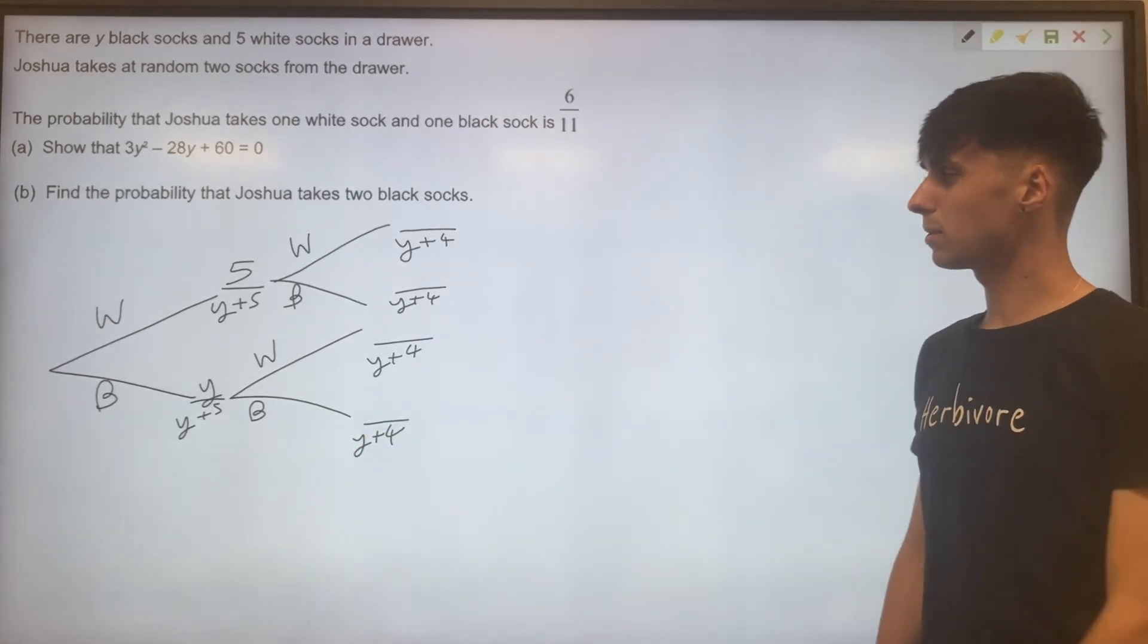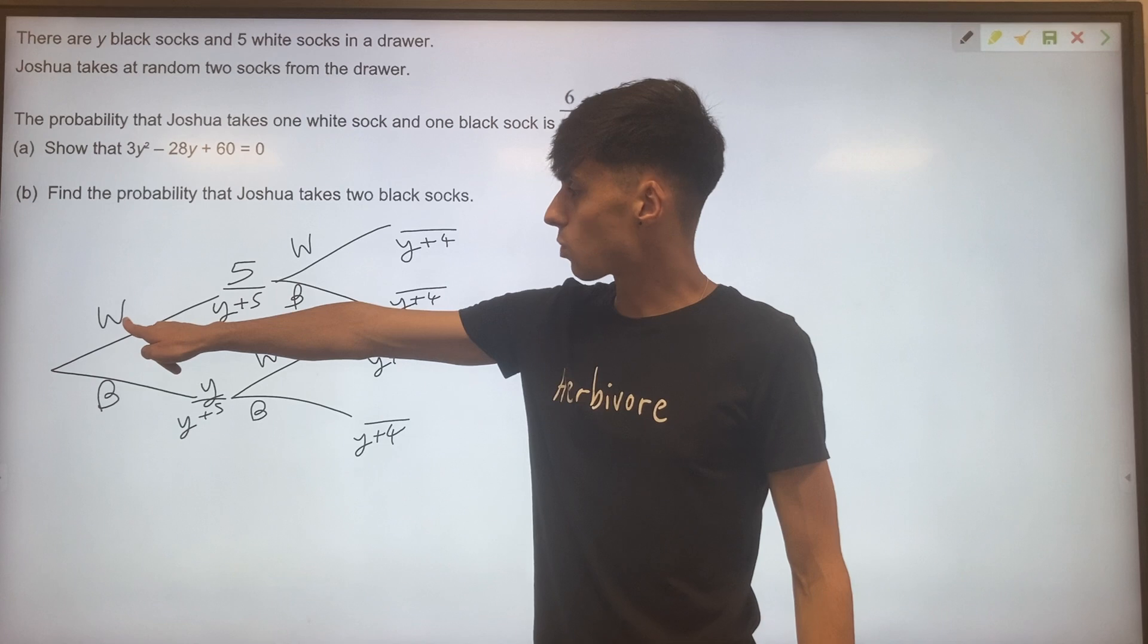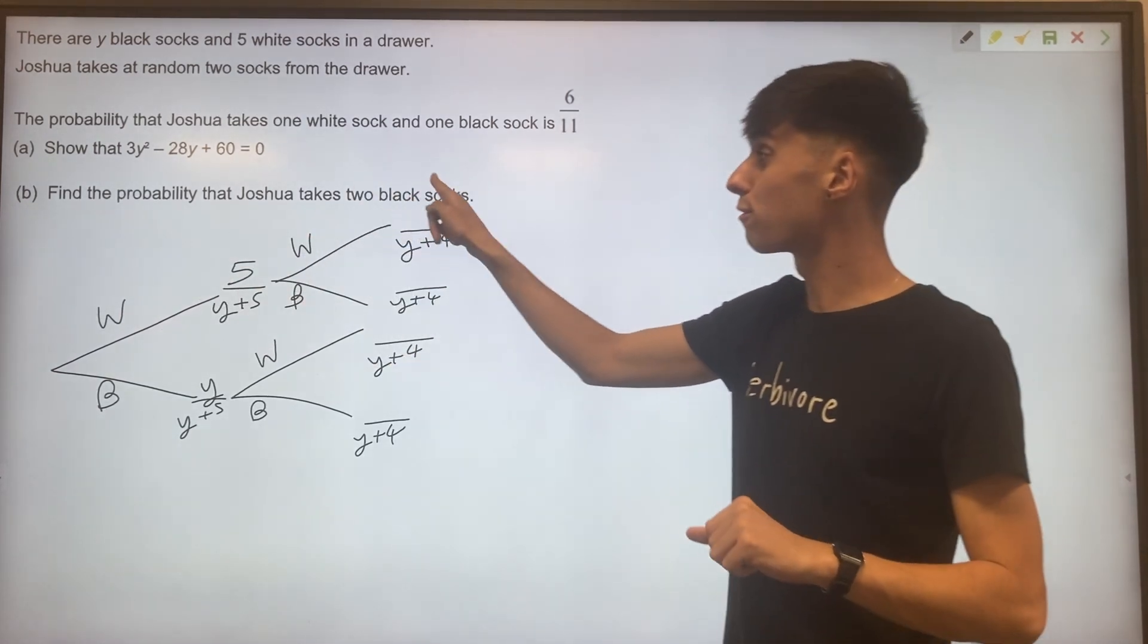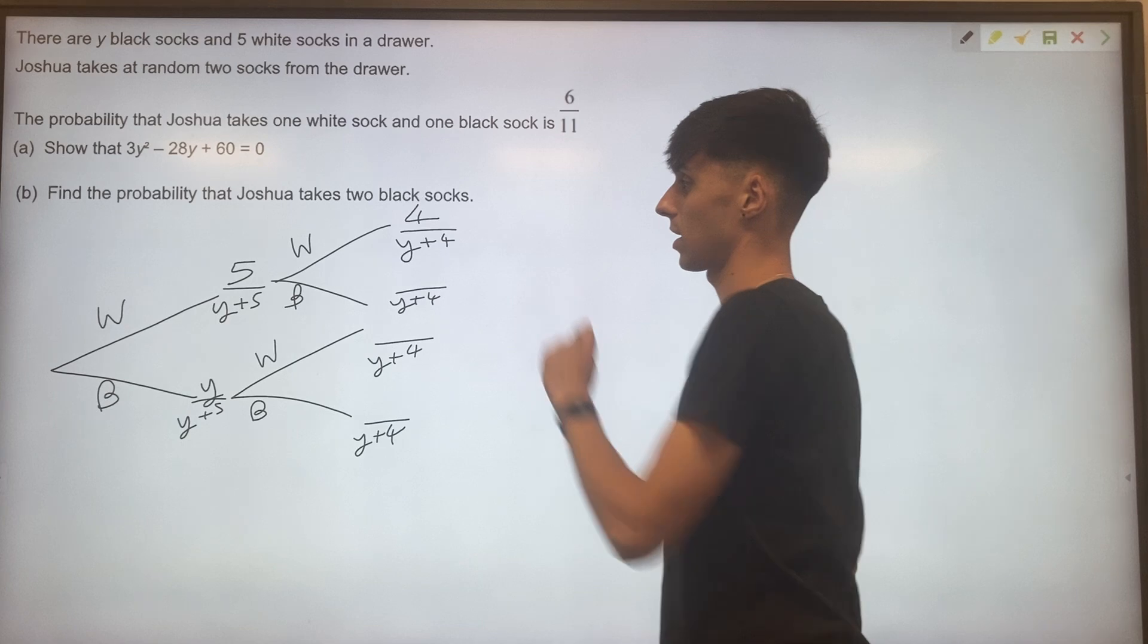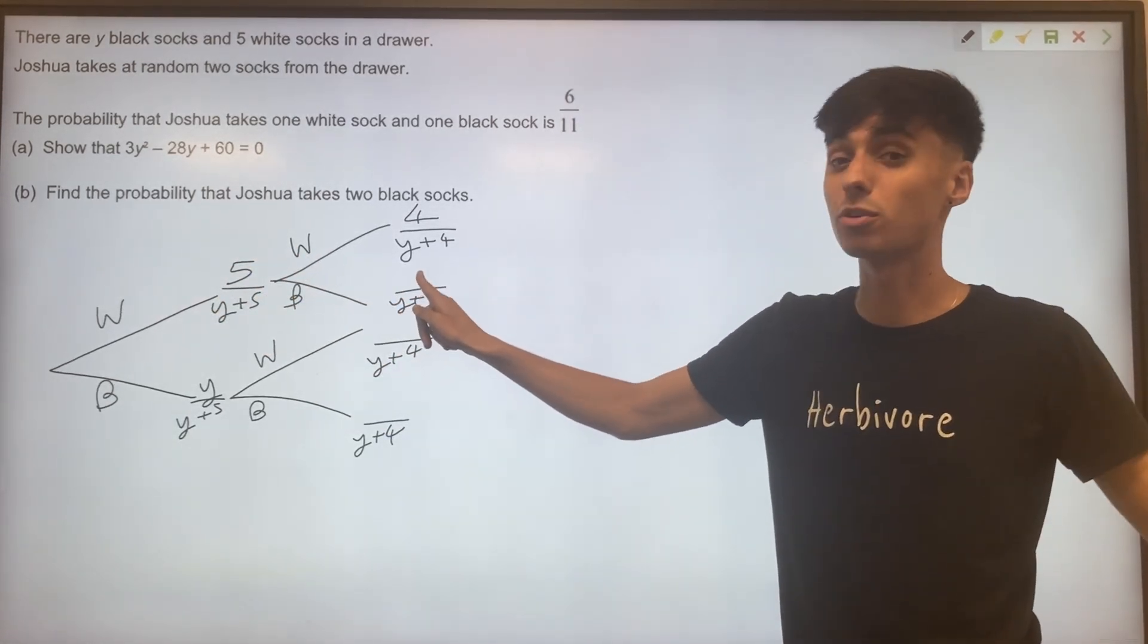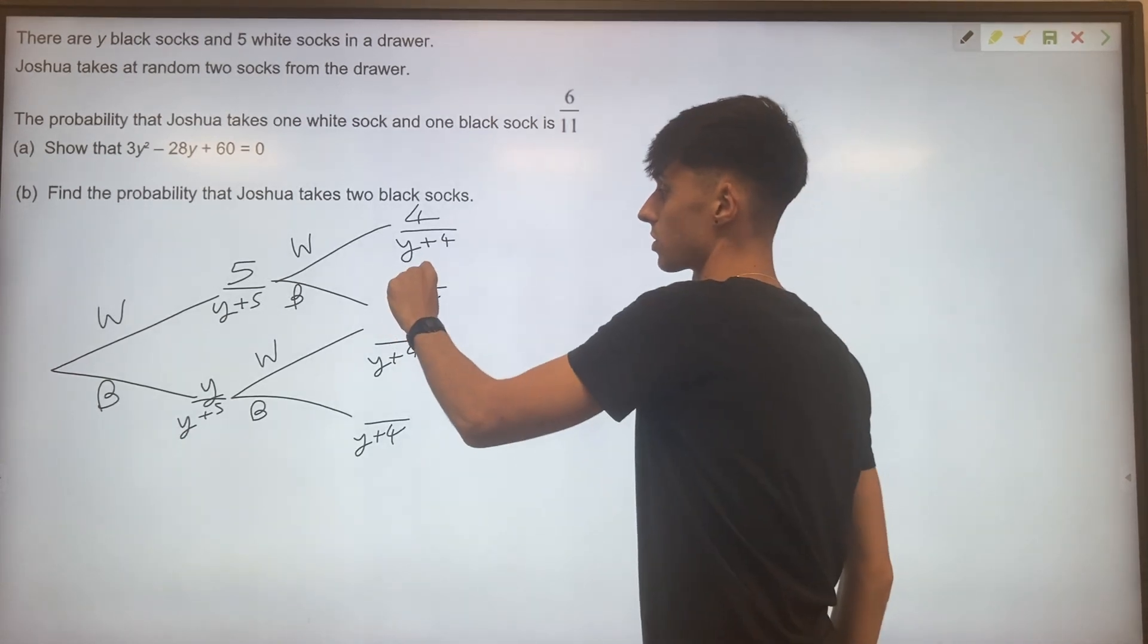Second part, maybe not quite as simple though. If you picked a white sock from your five white socks, you only have four left for the second pick. However, if you picked a white sock, you didn't affect the number of black socks. So those would still be a y.